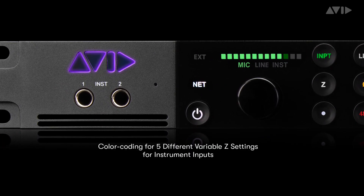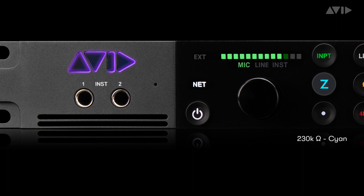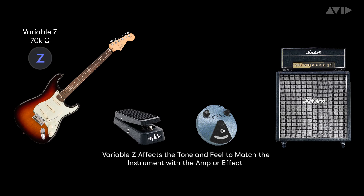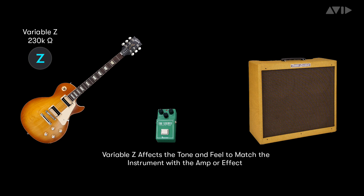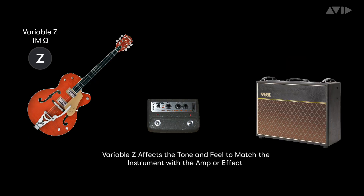The front panel instrument inputs have five different colour-coded settings: 1 megaohm white, 230 kiloohms cyan, 90 kiloohms blue, 72 kiloohms violet, and 32 kiloohms fuchsia. These affect the tone and feel, matching the impedances of different guitar amps and effects hardware. This allows you to experiment and see which setting works best with your effects chain or gives you the best tonal complement to the material being recorded.